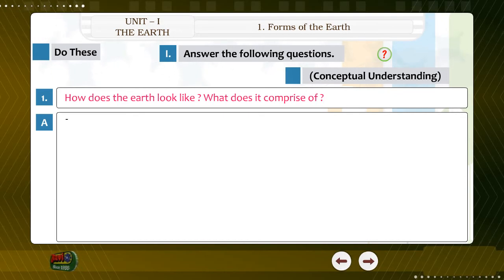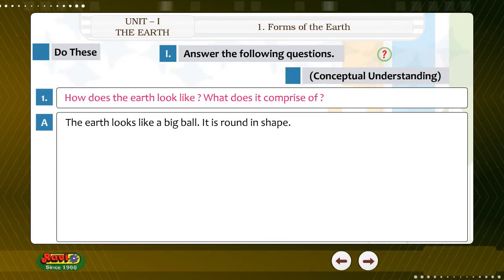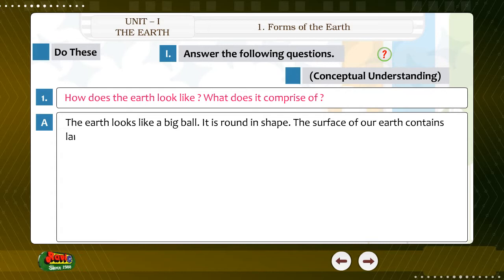Answer. The earth looks like a big ball. It is round in shape. The surface of our earth contains land and water. The land comprises of only 29% of the total surface area whereas water comprises 71% of the area.